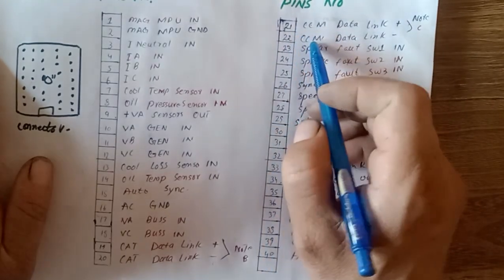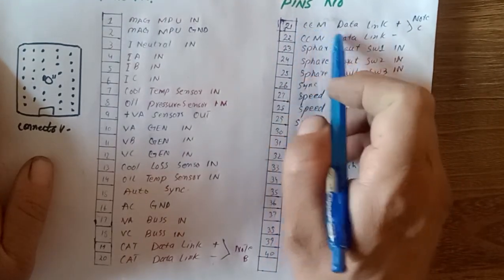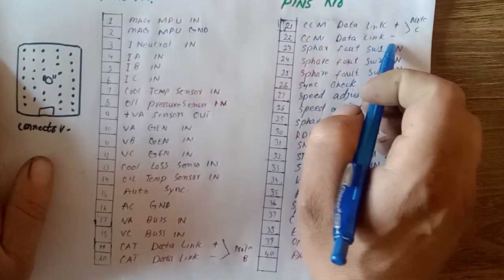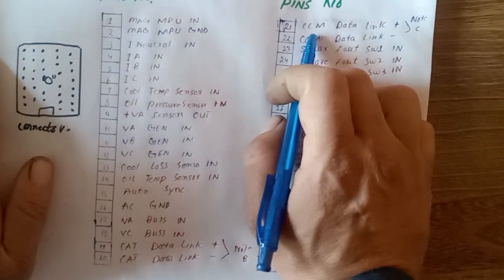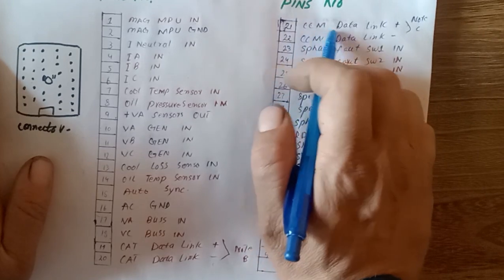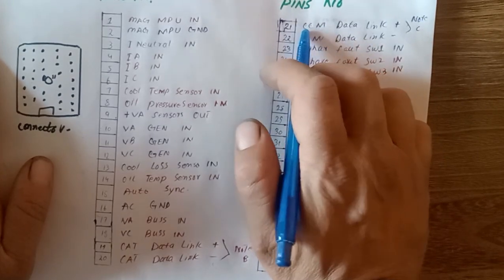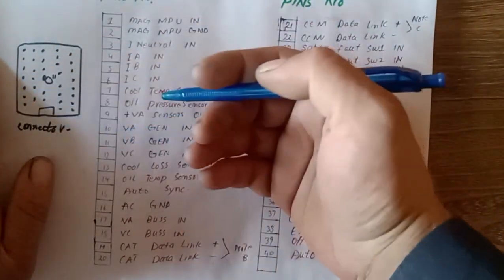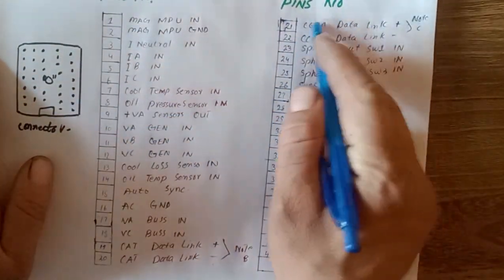Pins 21 and 22 are CCM data link positive and negative. The full form of CCM is Customer Communication Module - this is a separate type of module you can connect here for the communication data link connection.